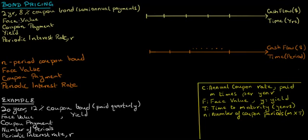In this video, we will talk about pricing a coupon bond. Let's start with the following example. Suppose you buy a 2-year 8% coupon bond where coupons are paid semi-annually. Let the face value of this bond be equal to $1,000.